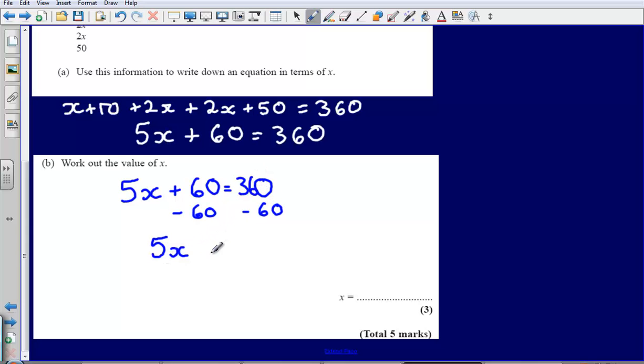Sorry, that should be 360, shouldn't it? That leaves me with 5x is equal to 360. Subtract 60, that leaves me with 300. Then I'm going to divide by 5 to tell me what x is. So dividing both sides by 5, 300 divided by 5, that's going to leave me with an answer of 60. So x is equal to 60.